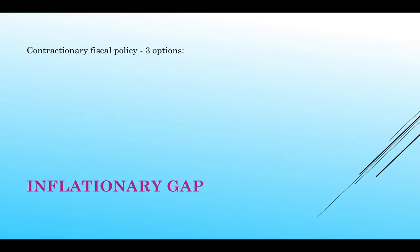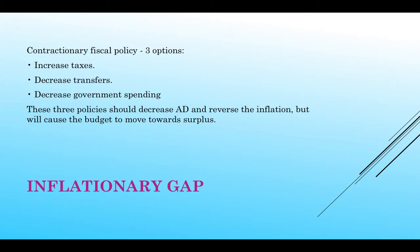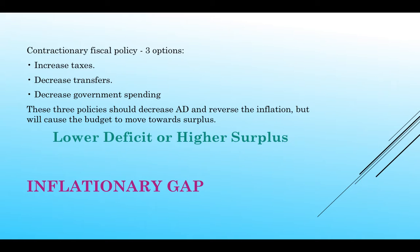When we're in an inflationary gap, we use contractionary fiscal policy — three tools: increasing taxes, decreasing transfer payments, which is basically lowering government spending, and decreasing government spending. That should decrease aggregate demand, help bring us out of the inflationary period, and it's going to cause the budget to move towards a surplus. Contractionary fiscal policy is going to lower our deficit or increase our surplus, which is great unless we are in a recession.